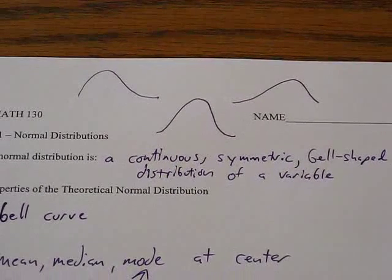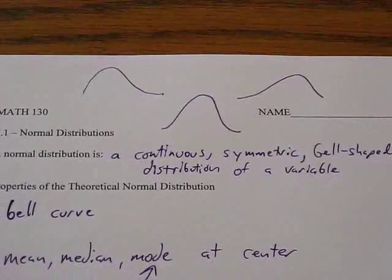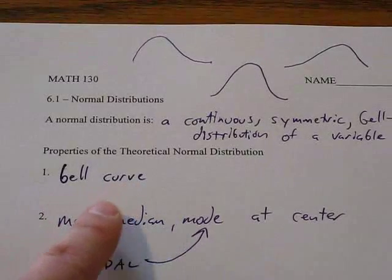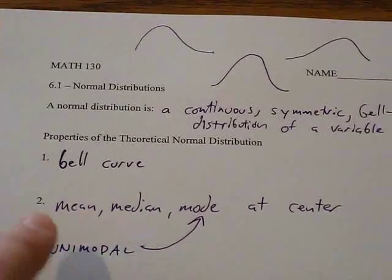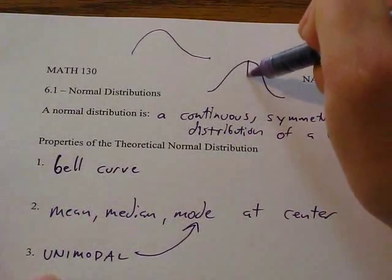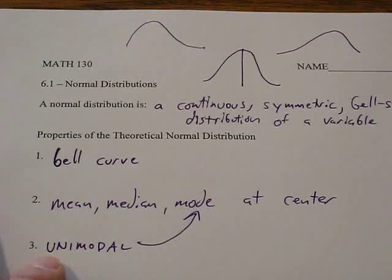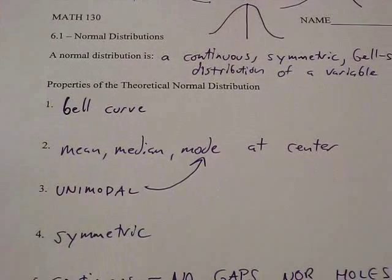These normal distributions have seven very important characteristics, and the eighth one we're going to draw a picture of. The normal distribution is a bell curve. The mean, median, and mode are all at the center of the distribution. The graph is unimodal, which means that it only has one mode, and that is also at the center of the distribution. It's symmetric, meaning the left side and the right side are exactly the same.